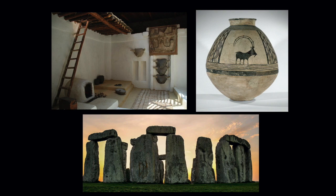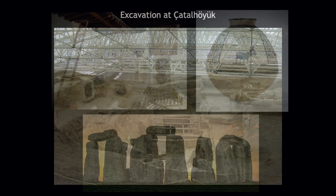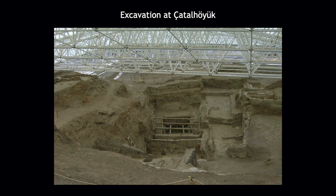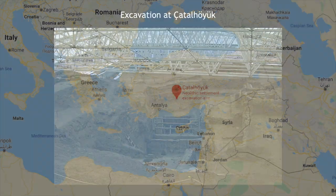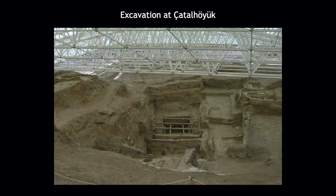The first Neolithic civilization we're going to talk about is Çatalhöyük, which is located in the south central part of modern-day Turkey. It dates to about 7,400 BCE and was home to as many as 3,000 people. The houses of Çatalhöyük were densely clustered and made of mud brick and mortar.